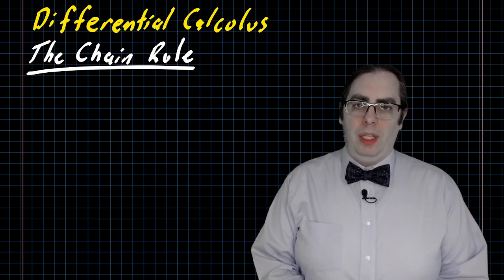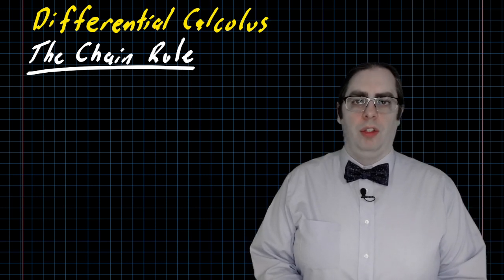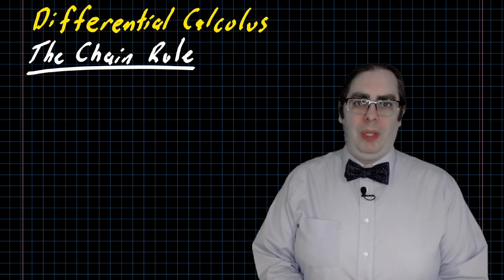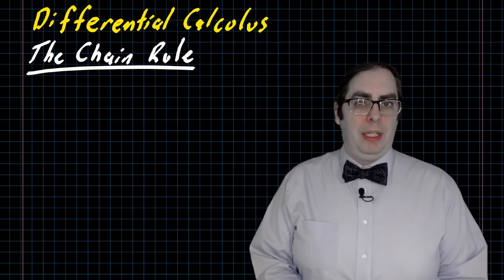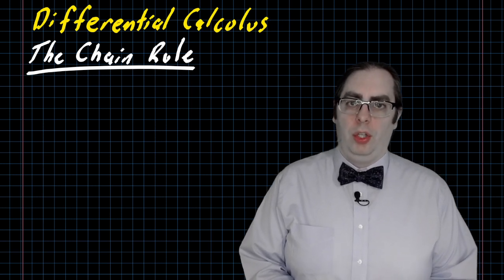The chain rule is the name of the tool we use for dealing with the composition of two functions, and finally we are here at the point of why we cared so much about being able to recognize the composition of two functions earlier in the course.